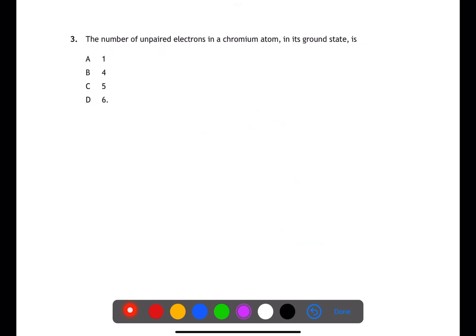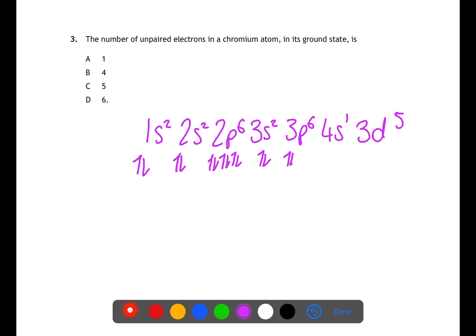For question 3 we need to start by writing out the electron configuration for a chromium atom. In its ground state a chromium atom has 1s2, 2s2, 2p6, 3s2, 3p6, 4s1, and 3d5. This is because there is an extra stability of having a half filled d shell. If we then draw out the orbital box notation we can see that all of the electrons are paired up until the end of 3p6. After this we have 6 unpaired electrons in the 4s and the 3d which is D.